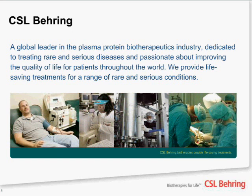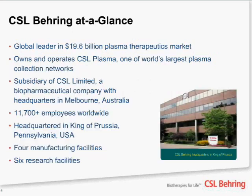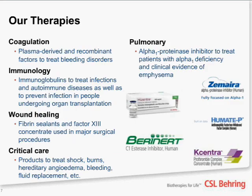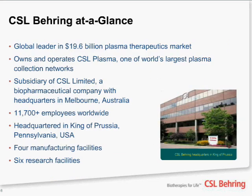We treat a number of different types of disorders. In terms of the company, we're in about a $20 billion industry. We collect our own plasma through our own internal network. We are part of CSL Limited, which is an Australian-headquartered company, and our headquarters for CSL Behring is in King of Prussia, Pennsylvania. We have multiple manufacturing facilities and multiple research facilities.